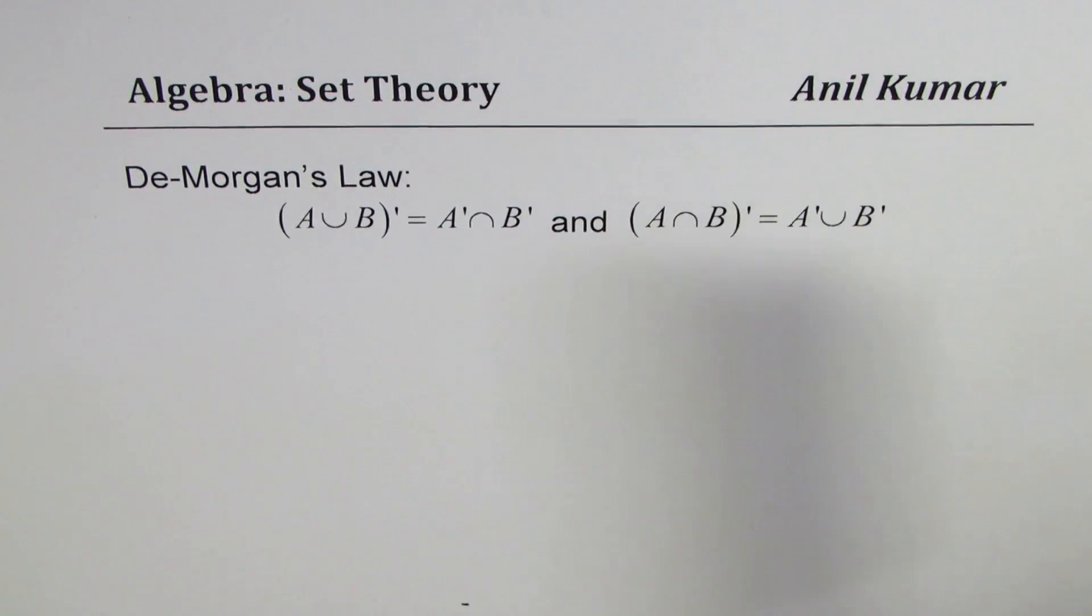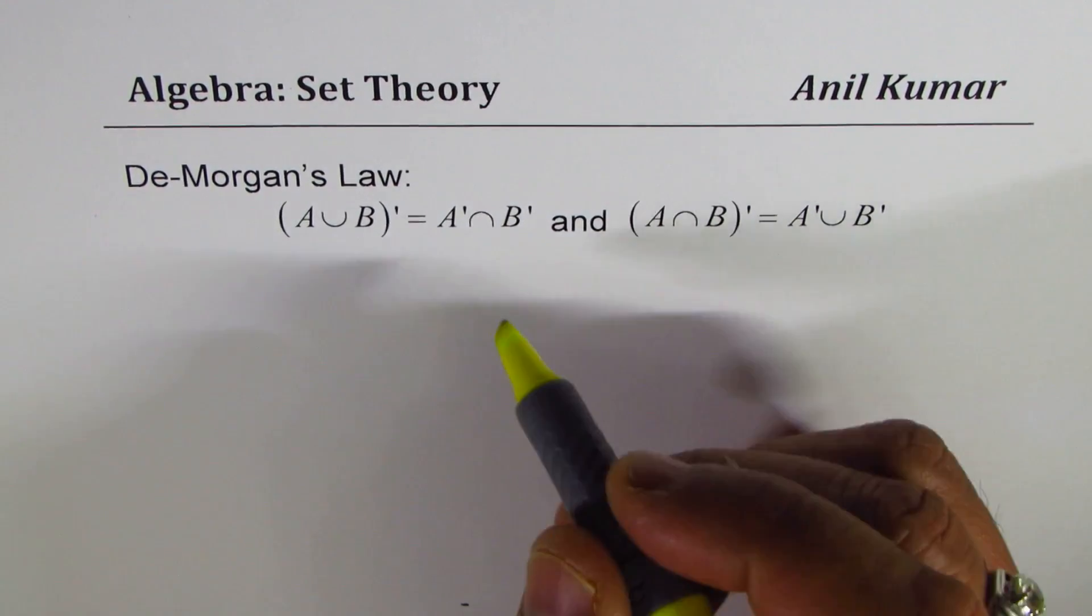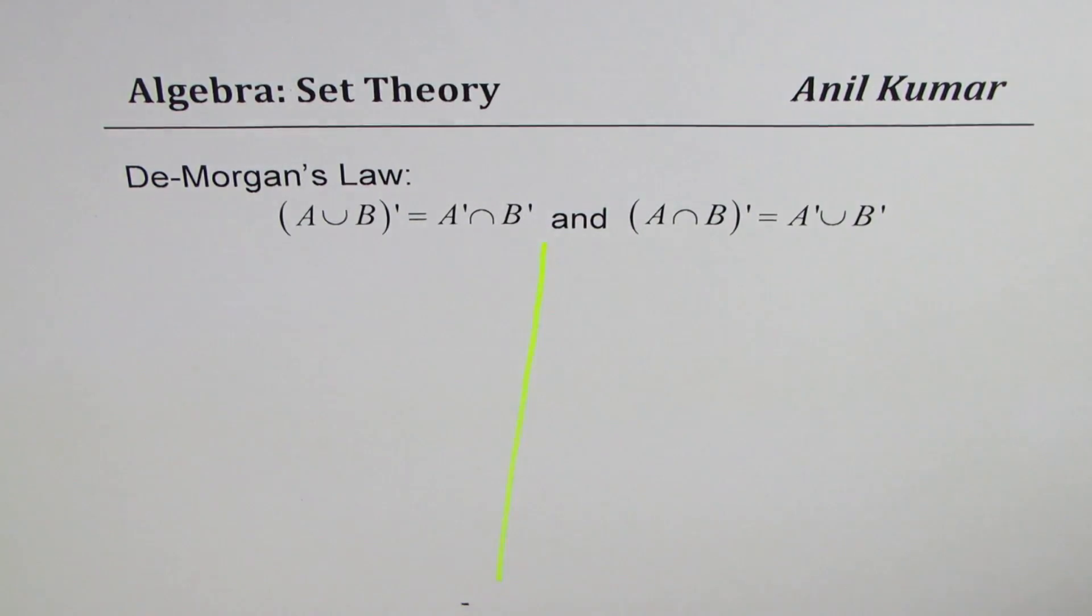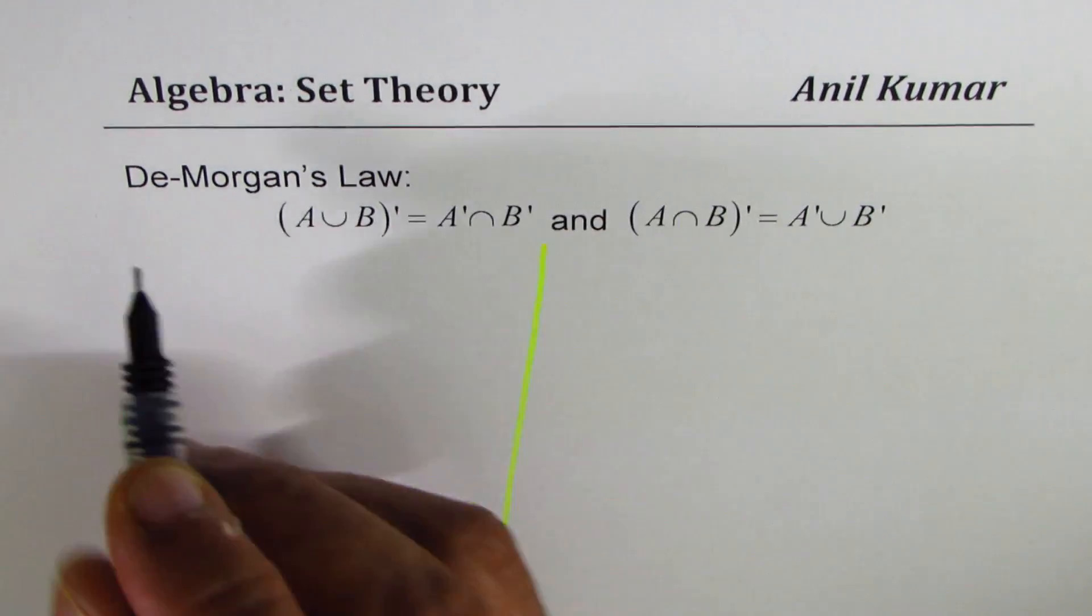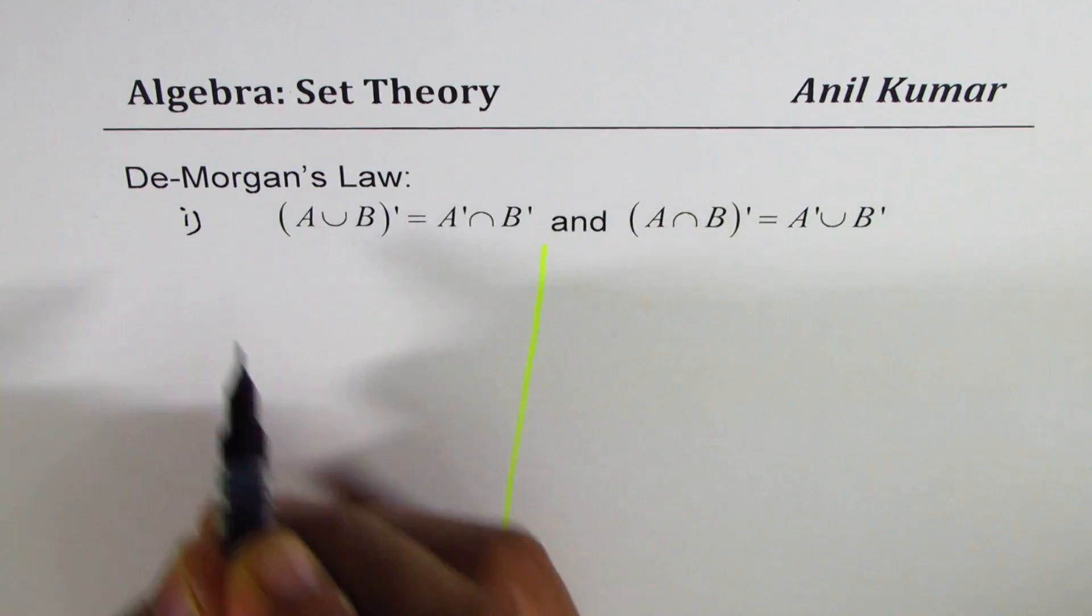We'll prove them algebraically. So let's take the first one, which is complement of A union B. Let me call this as the first one.